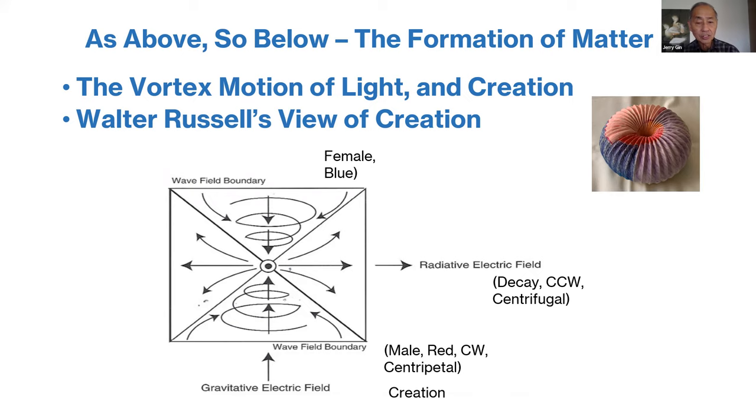Gravitative, radiative, gravitative magnetic light—you can call light red and blue. That is the basis of matter formation. Matter decay is based upon centrifugal motion, which is counterclockwise from the center, whereas centripetal motion is a clockwise motion.